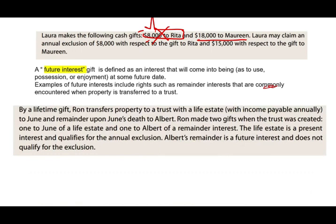By a lifetime gift, Ron transfers property to a trust with a life estate, with income payable annually to June. He gave the gift to June, and the remainder upon June's death goes to Albert. So Ron made two gifts: one is a present gift to June, and once June passes away, it passes to Albert. What Albert gets — the remainder — is a future interest and does not qualify for the $15,000 exclusion. So we need to understand that the gift has to be present.